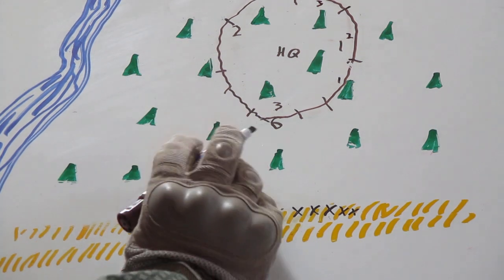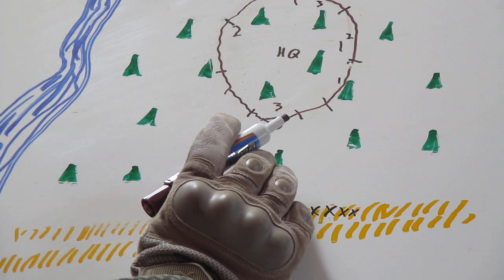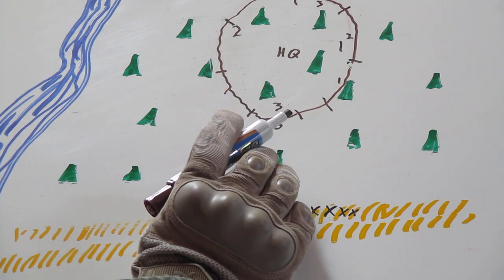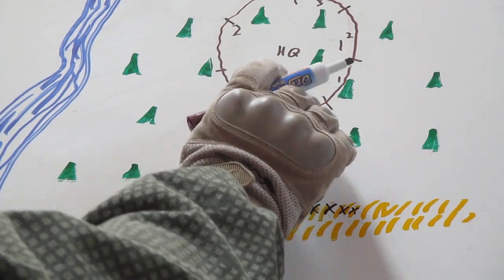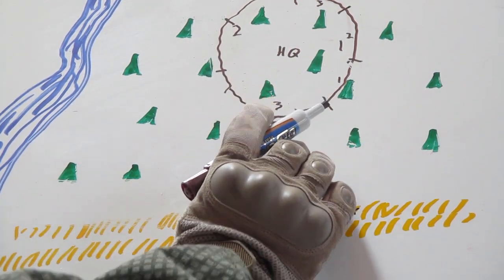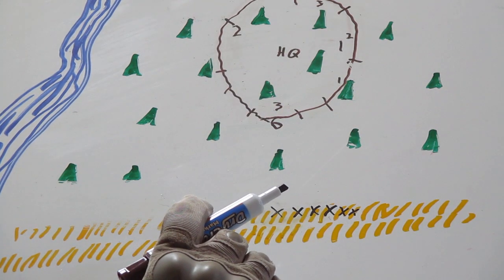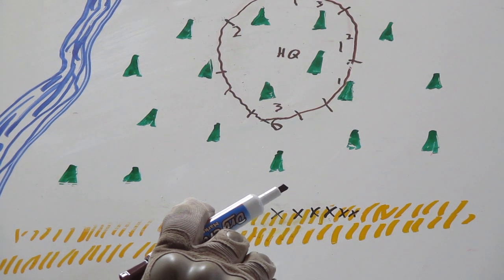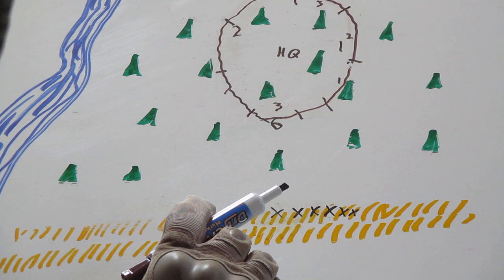The squad leader will assign each two-man buddy team their sectors of fire - where their primary sector of fire is, their secondary, and where their final protective line of fire would be. The final protective line of fire would be typically sited down high-speed avenues of approach in that area.